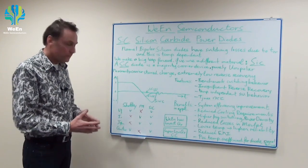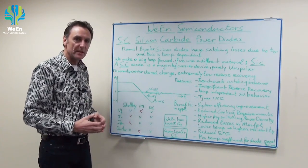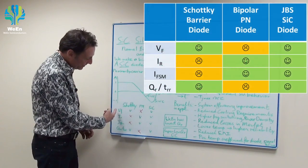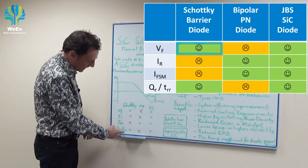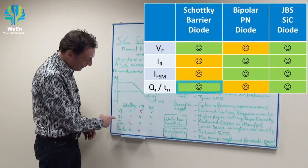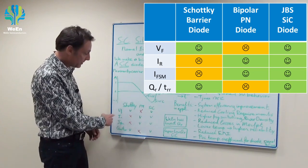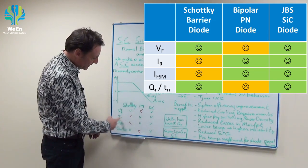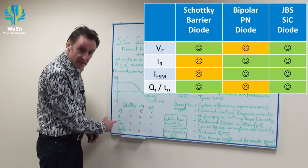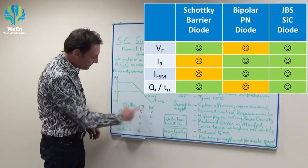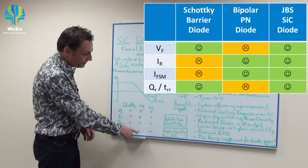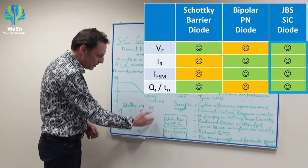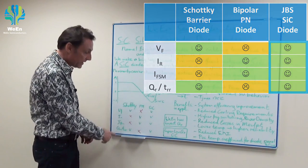In this table, I can clearly show that silicon carbide diodes give the best of both worlds. Schottky diodes are good for VF and reverse recovery, but not good for inrush current and reverse current. A bipolar PN diode is very good for reverse current and inrush current, but not good for VF and reverse recovery. Our unipolar silicon carbide devices score very well on every aspect.